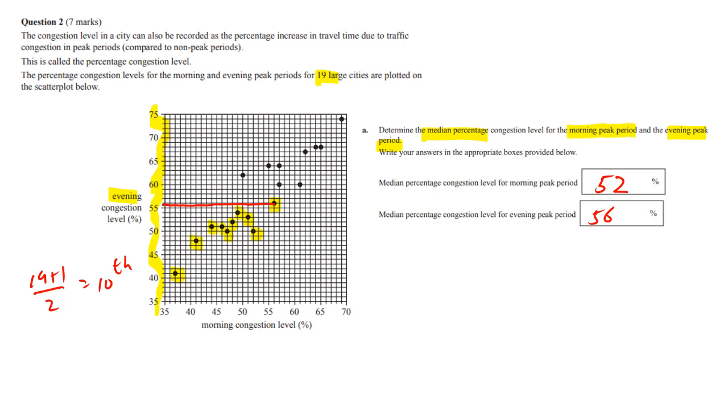So that is how you know that those are the answers. But a lot of people made a mistake on the evening period one, and that's why only 41 percent of people got the full two marks.